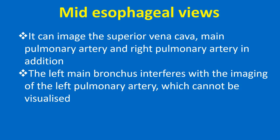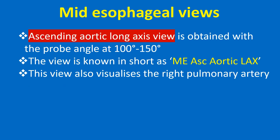The left main bronchus interferes with the imaging of the left pulmonary artery, which cannot be visualized. The ascending aortic long axis view is obtained with the probe angle at 100-150 degrees, known in short as ME S Aortic LAX. This view also visualizes the right pulmonary artery.